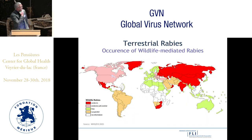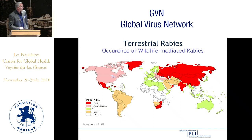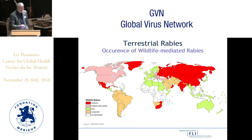With wildlife rabies, it's a different story. Wildlife-mediated rabies mainly occurs in the northern hemisphere, though there is growing evidence that rabies can also be maintained in wildlife in other parts of the world. However, the level of surveillance in most of the world is still inadequate.